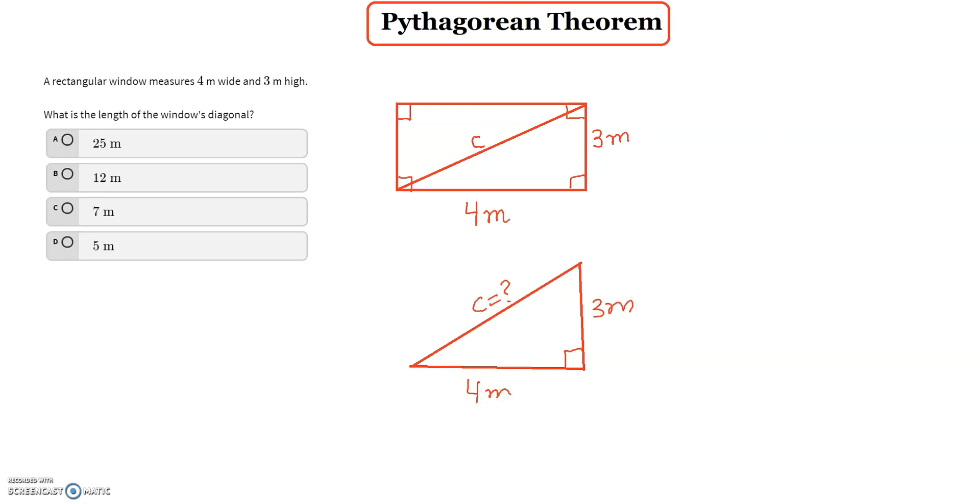Now first thing is I will write the Pythagorean theorem first which is a squared plus b squared equals to c squared and we can label it a is 3 and b is equal to 4. You can always interchange. You can write b equals to 3 and a equals to 4.